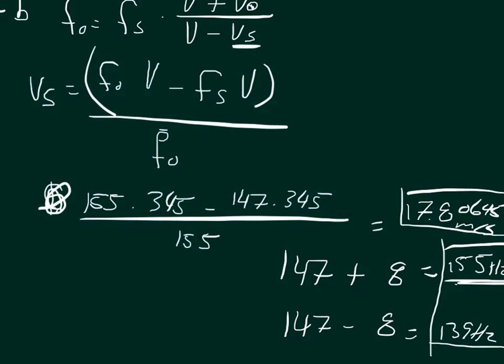Coming towards. Since the number is positive, we know that the source is moving towards the observer. So it's 17.80645 meters per second moving towards the station, and that would give us the 155 hertz frequency.